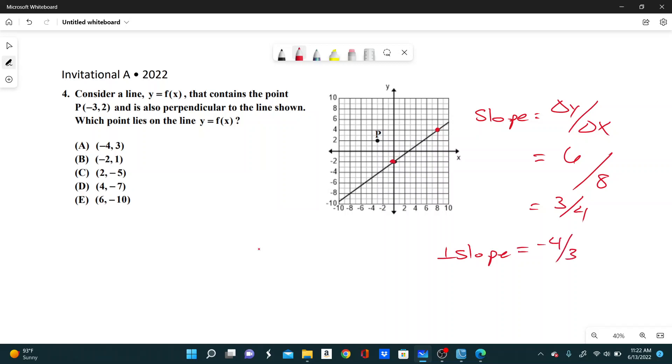Once we have this and we have our point, we can use point-slope to find the equation of y equals f of x. If we have a slope of negative 4 thirds and the point negative 3 comma 2, then point-slope tells us that our equation will be y minus 2 equals negative 4 thirds times x plus 3. For the sake of the problem, I'm going to move the 2 over to the right-hand side.